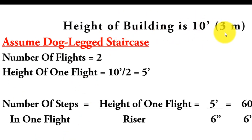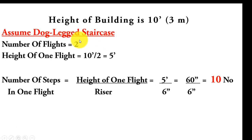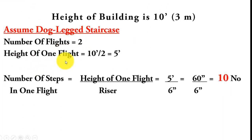The height of the building is assumed as 10 feet, that is approximately 3 meters. We will assume it is a dog-legged staircase, not an open-well staircase. In a dog-legged staircase, when you reach the landing you rotate 180 degrees to go to the second flight. We assume two number of flights, meaning one landing comes between the two flights.